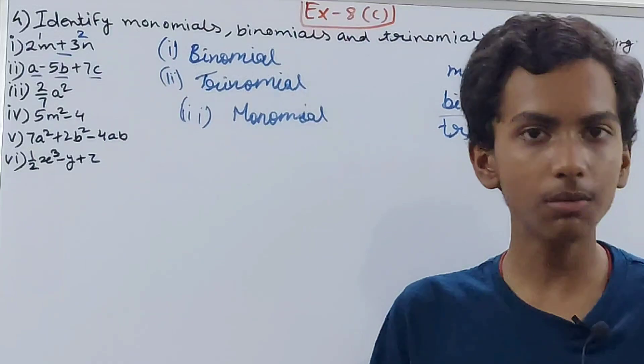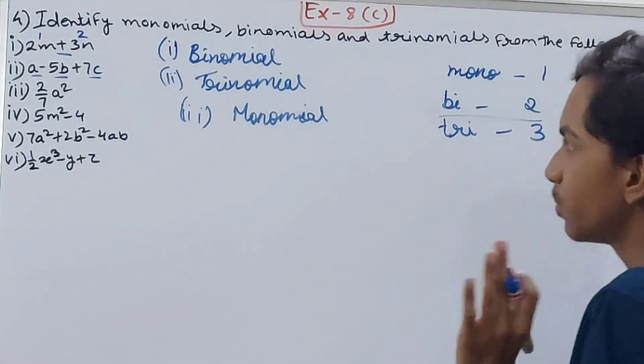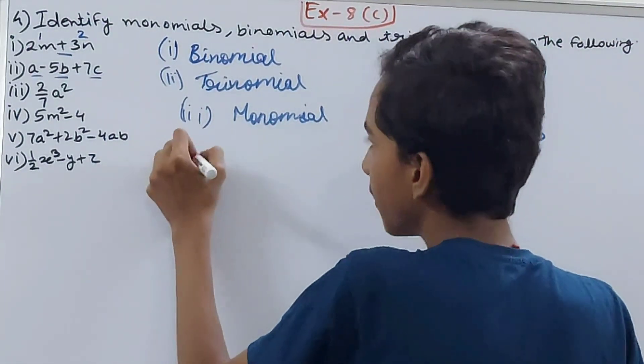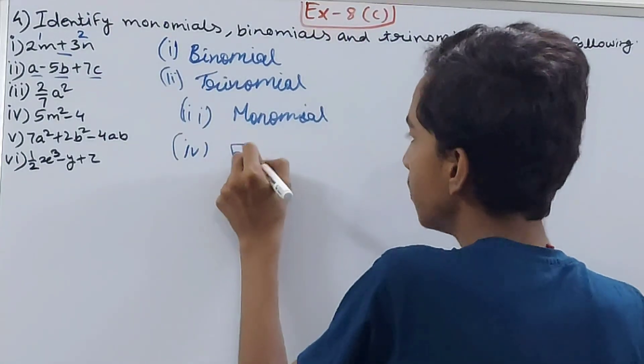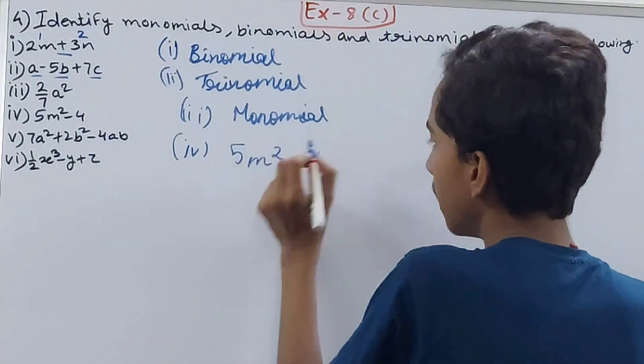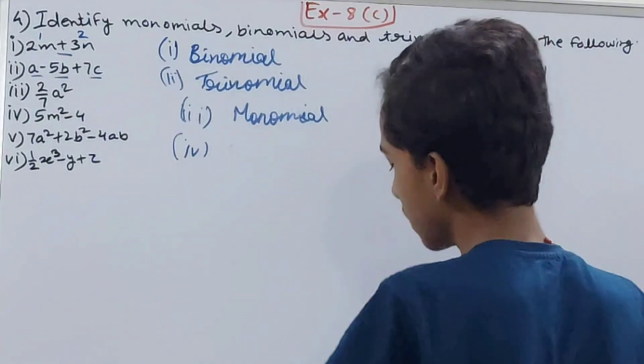The fourth part: 5m² minus 4. Two terms are there, so this is a binomial - simple - because both terms are separated by the minus sign.